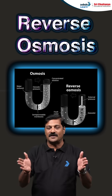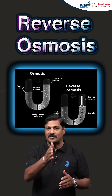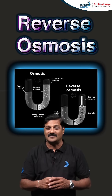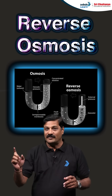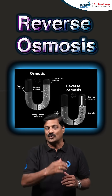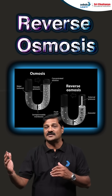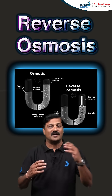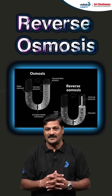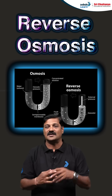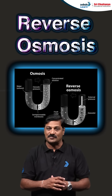When two different solutions are separated by a semi-permeable membrane, solvent passes through from low concentration to high concentration. This process is called the normal osmosis process.